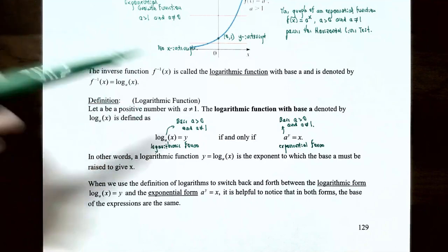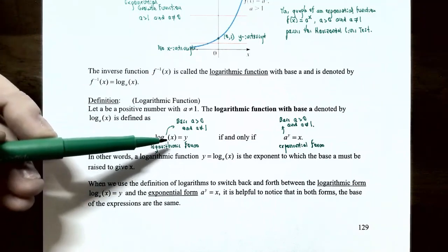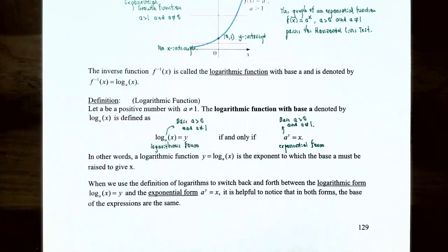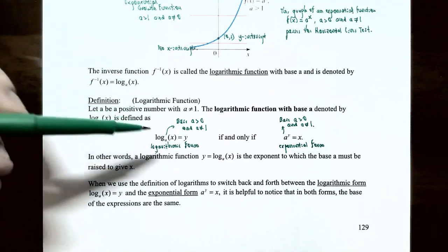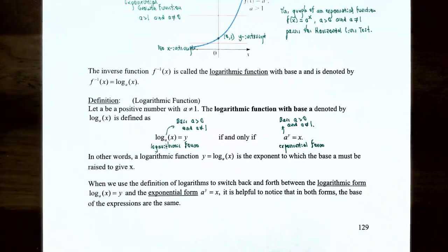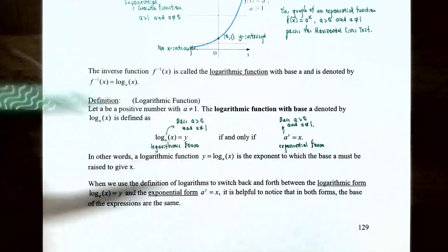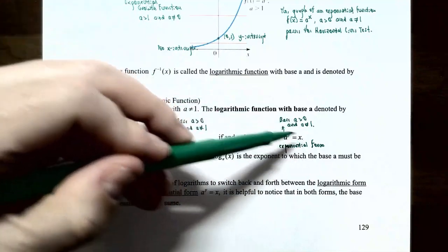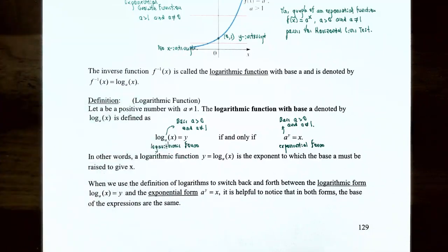The definition of a logarithmic function: let a be a positive number where a ≠ 1. The logarithmic function with base a is defined so that log_a(x) = y means a^y = x. On the left side, log_a(x) = y is logarithmic form. On the right, a^y = x is exponential form. The base is a in both; y is the exponent; and x is the argument. These two forms are equivalent and mean exactly the same thing.